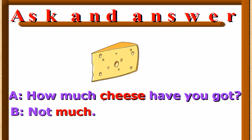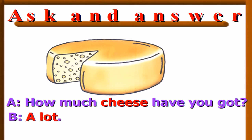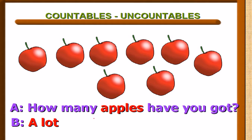'How much cheese have you got?' — We use 'much' here because cheese is an uncountable noun. The answer can be 'a lot' or 'not much.' 'How many apples?' — We use 'how many' because apples is a countable plural noun. The answer can be 'a lot.' 'How many sandwiches have you got?' — 'Not many.'